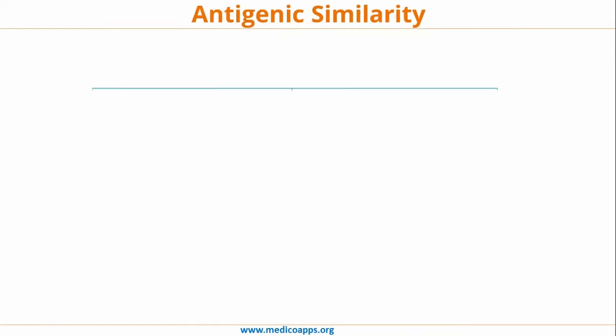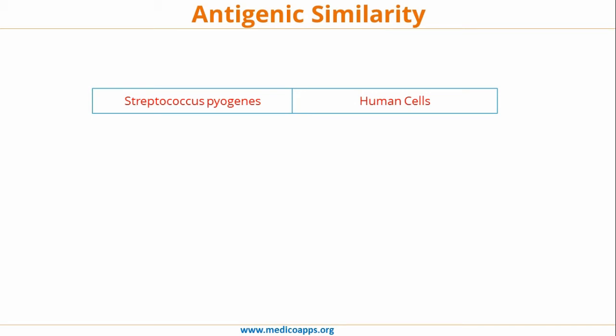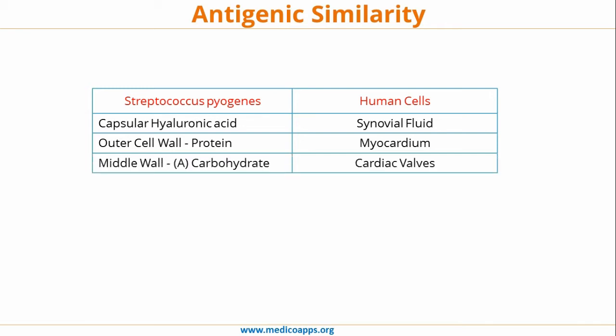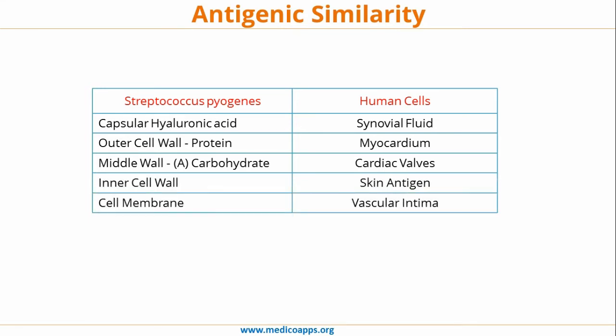Moving forward, let's look at the antigenic similarity between Streptococcus pyogenes and human cells. The capsular hyaluronic acid is antigenically similar to synovial fluid. The outer cell wall protein is antigenically similar to myocardium. The middle wall is similar to cardiac valves. The inner cell wall is similar to skin antigen, and the cell membrane of Streptococcus pyogenes is similar to the vascular intima.